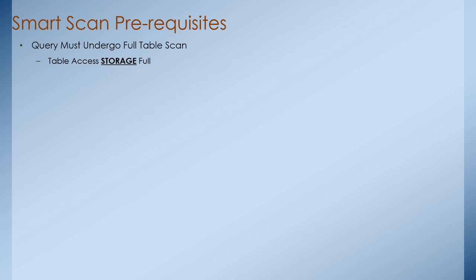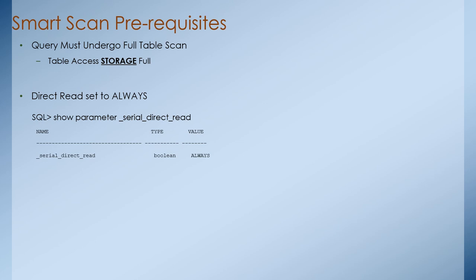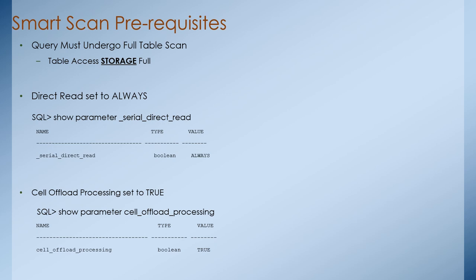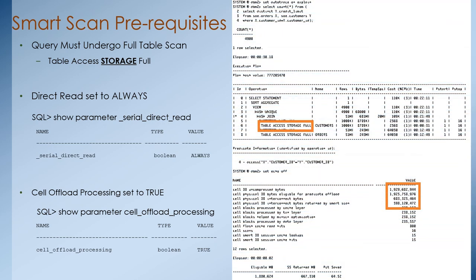The first prerequisite is that the query must undergo a full table scan in order for smart scan to be enabled — using a specific index or hint will impact smart scan functionality. The second is that the underscore serial direct read parameter is set to always. The third is that the cell offload processing parameter is set to true. These two parameters make the database read directly from the storage server and allow database operations to be offloaded to the storage servers. If you take an explain plan of your query, you can see the term 'table access storage full', meaning your query is using smart scan. You can also identify this using V$SESSION_STAT, where you can see the total eligible bytes for cell offload as well as the physical IO interconnect bytes written by smart scan.